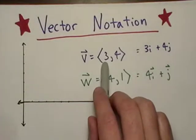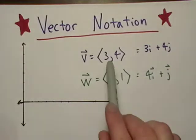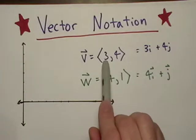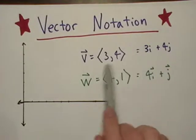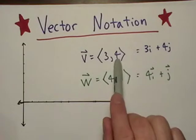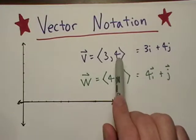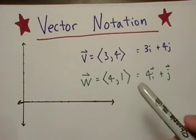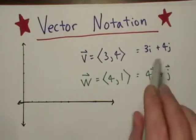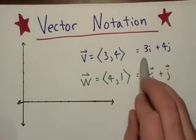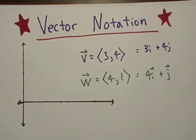The 3 and 4 are referred to as the horizontal and vertical components. We go over 3 and then up 4. This is an alternative notation form: 3i plus 4j.